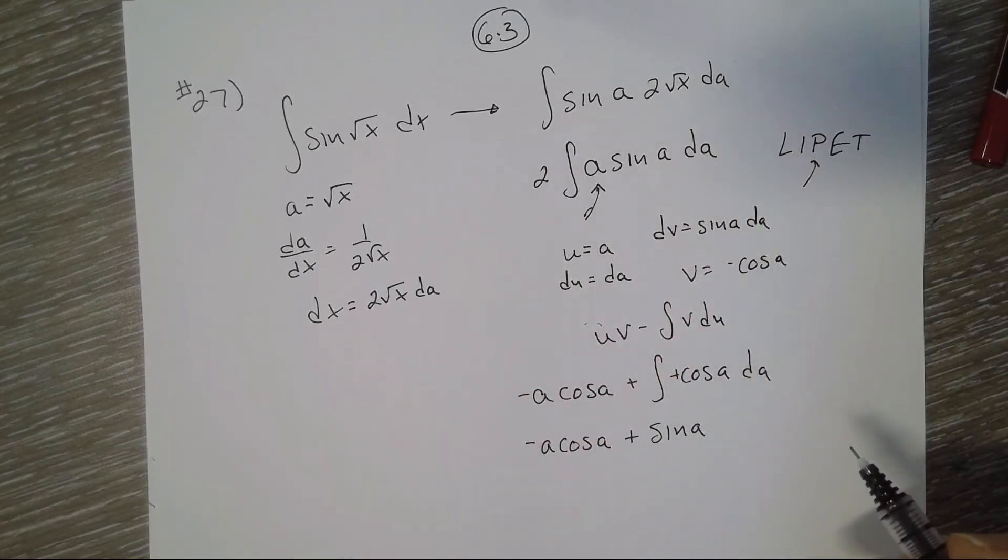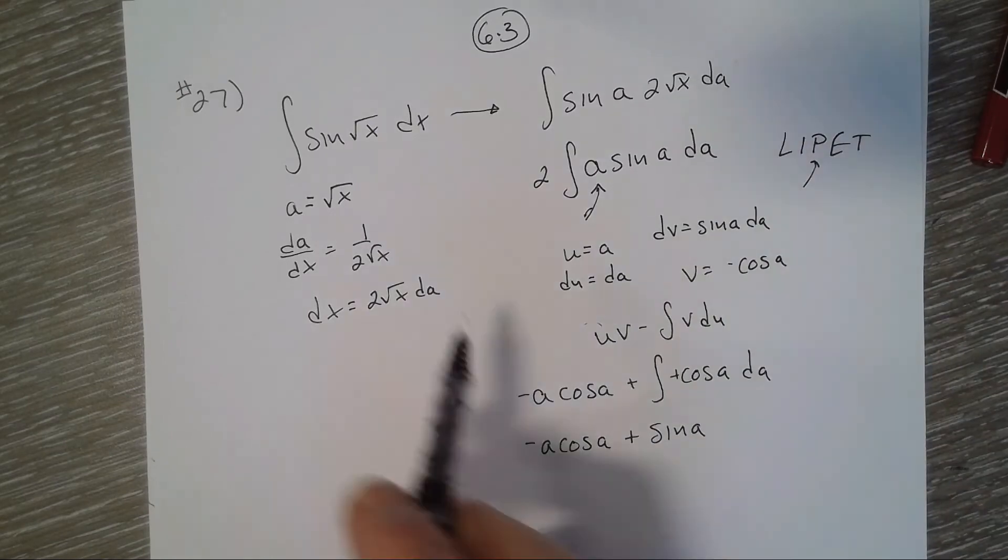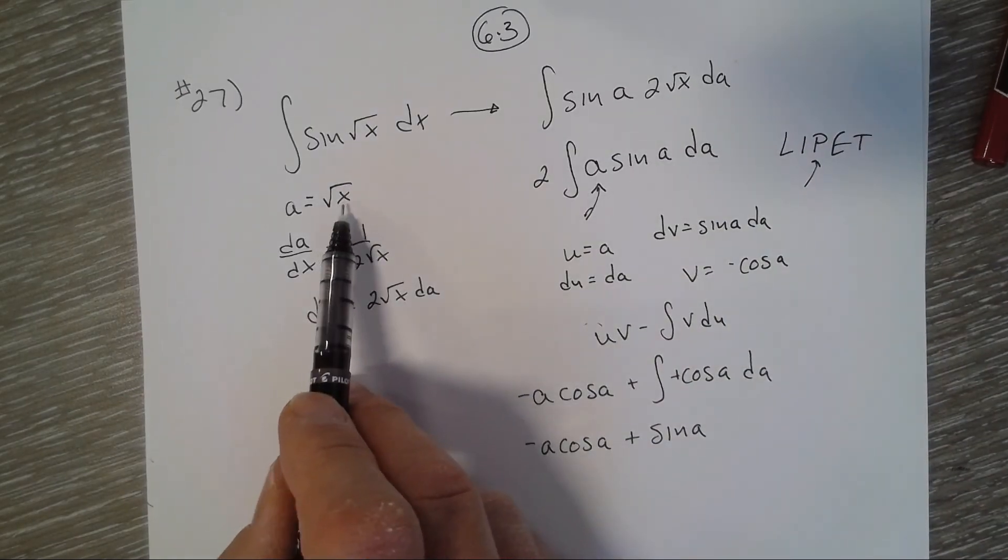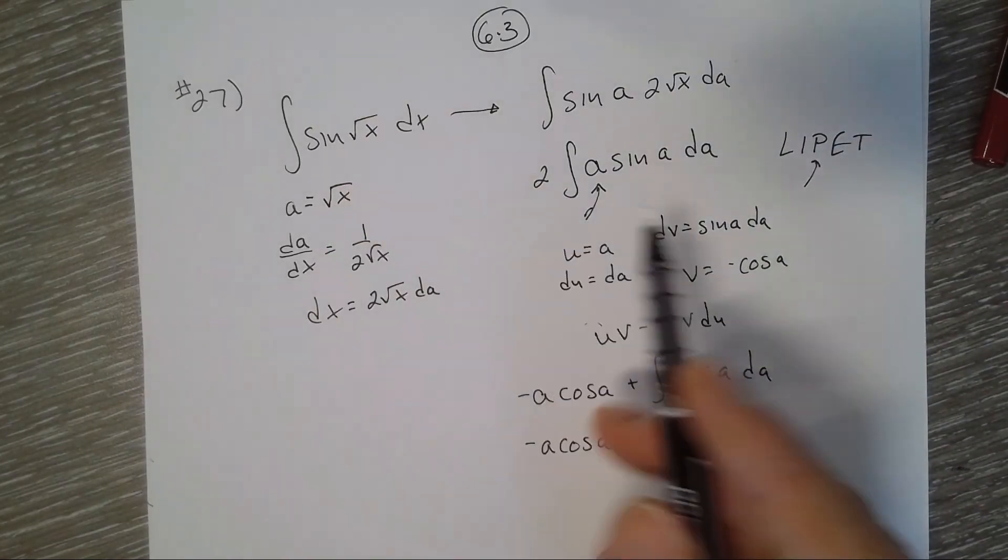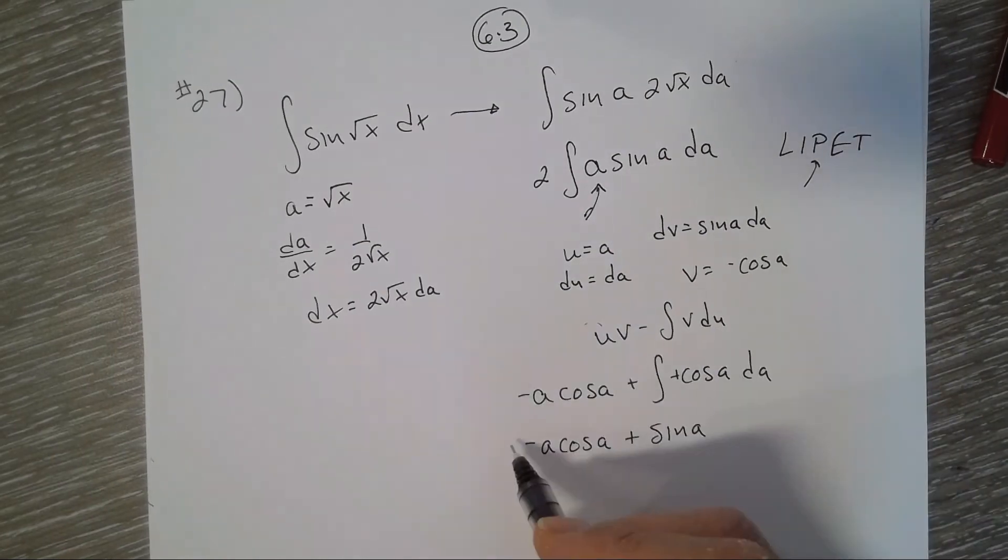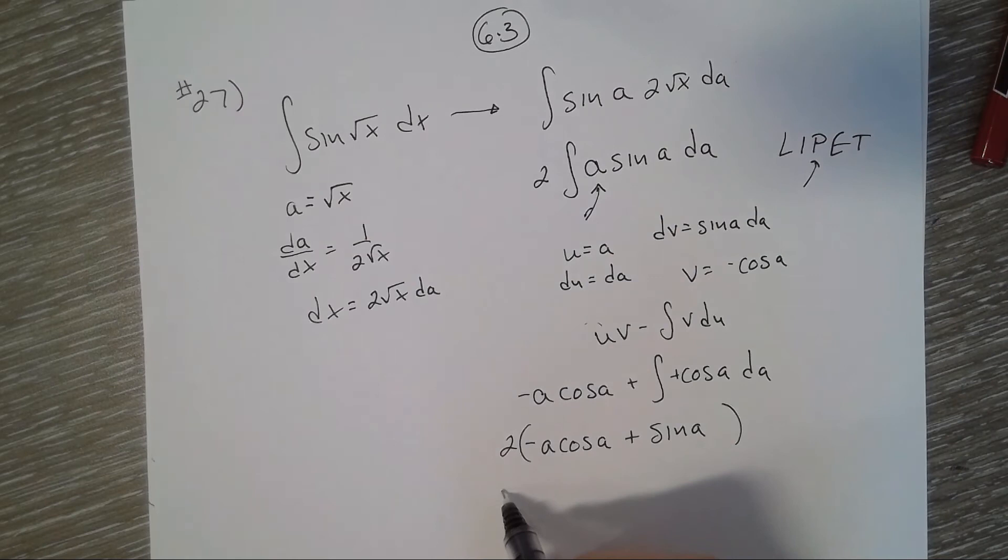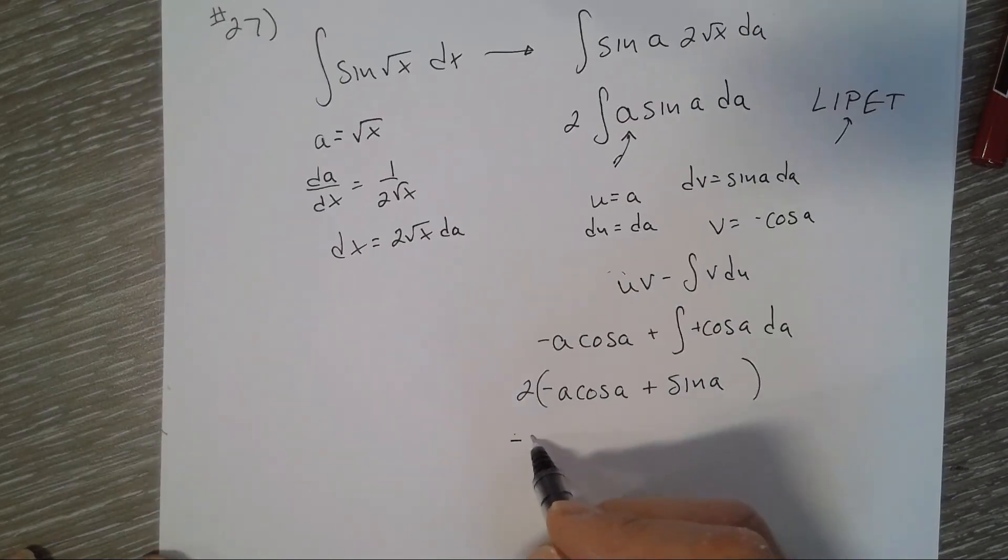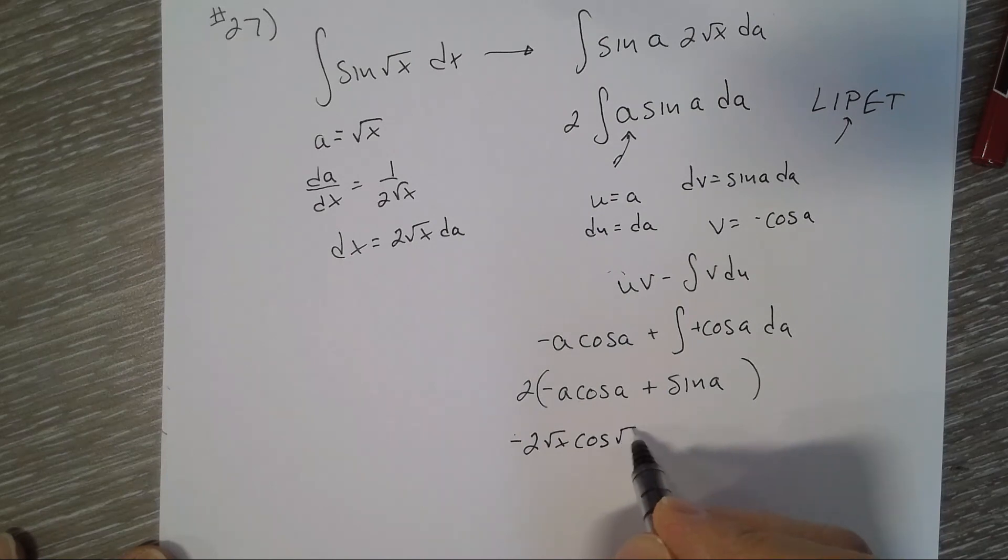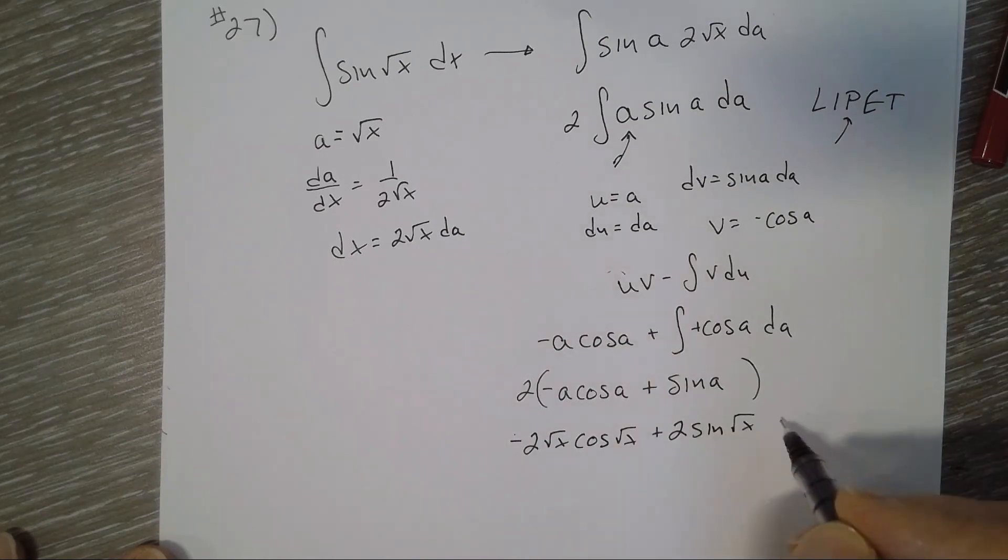So two things: we've got our a's which we have to turn into square root of x, and we can't forget about our 2 either. So I have negative 2 square root of x cosine square root of x plus 2 sine square root of x plus C.